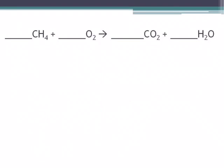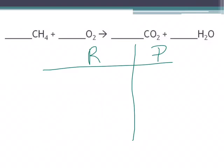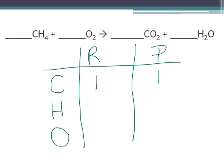In this equation we have carbon, hydrogen, and oxygen on both sides. So again, let's make a chart with reactants and products, and our elements: carbon, hydrogen, and oxygen. On our reactant side we have one carbon; on our product side, one carbon. On our reactant side for hydrogen we have four; on our product side we have two. On our reactant side for oxygen we have two, and on our product side we have two here and another one, so we have three.